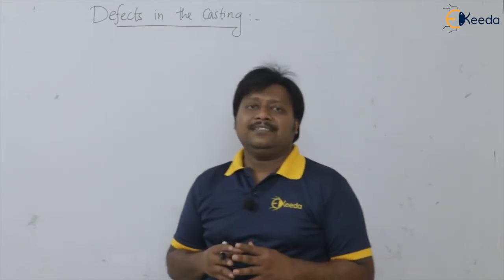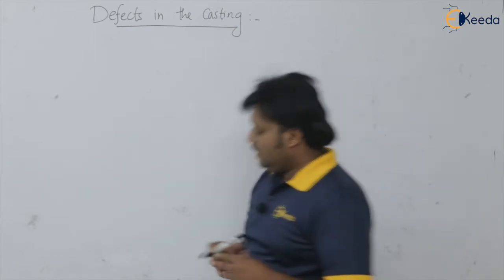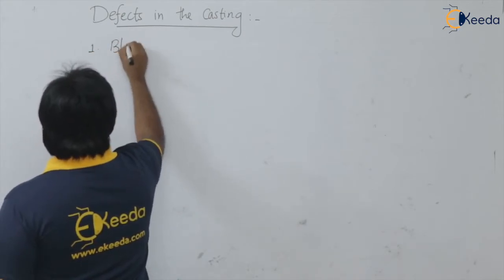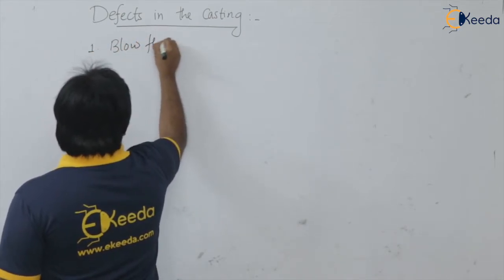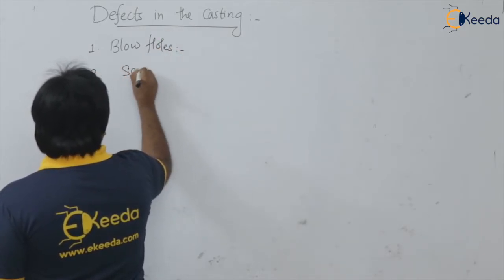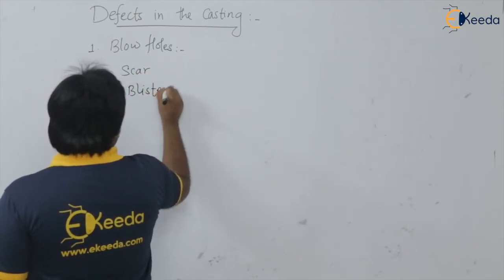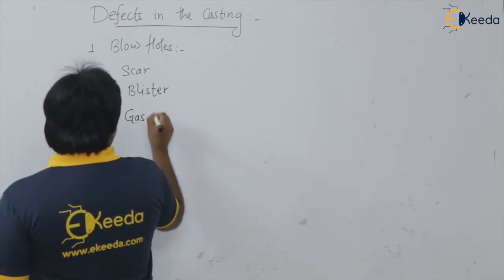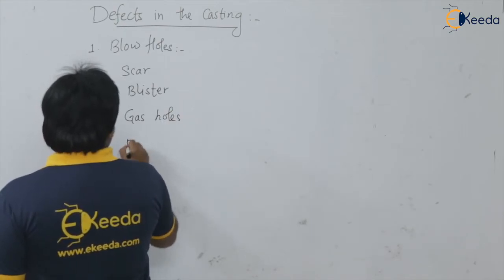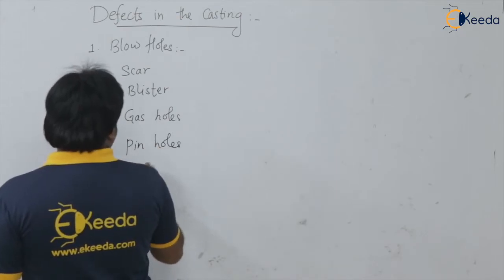Let us start with the gaseous defects, which are very important defects in the casting. In the gaseous defects, we are having the blow holes, then we are having scar, blister, gas holes, pin holes, and the porosity.